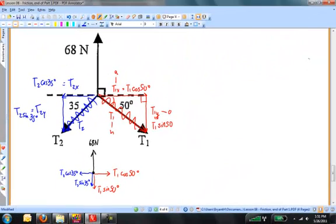Horizontally, I can say that T1 cosine of 50 degrees is equal to T2 times the cosine of 35 degrees.